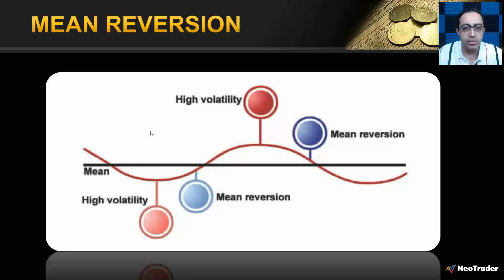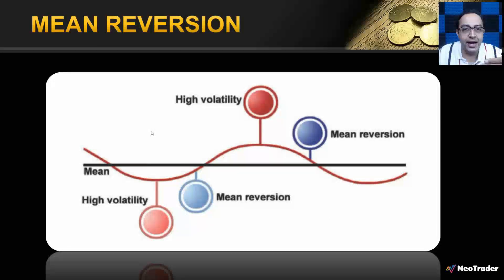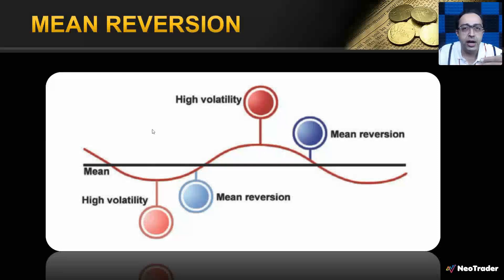This mean reversionary approach is depicted in various forms — it can be through a moving average, a pivot, a Bollinger Band, a Keltner Channel. There are many ways to understand the concept of mean reversion. What we are going to see today is mean reversion through the lens of the pivot, which is a very powerful way to look at the markets.